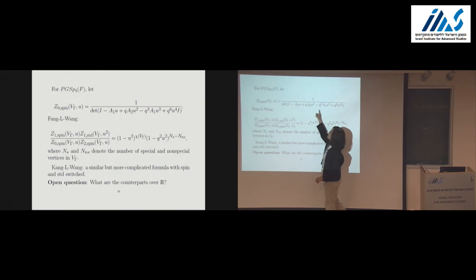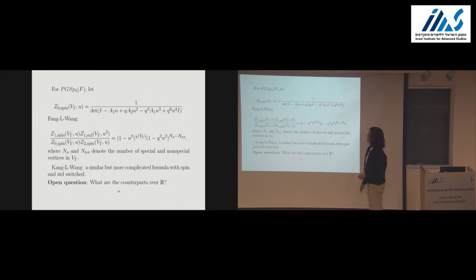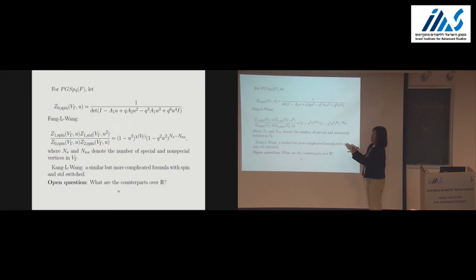We started with Selberg's work for PGL(2) over ℝ, then considered PGL(2) over a p-adic field, then PGL(3) over a p-adic field, and PGSp(4) over a p-adic field. The question Peter already mentioned is: what are the counterparts for rank-two groups over ℝ? I'll stop here. Thank you.